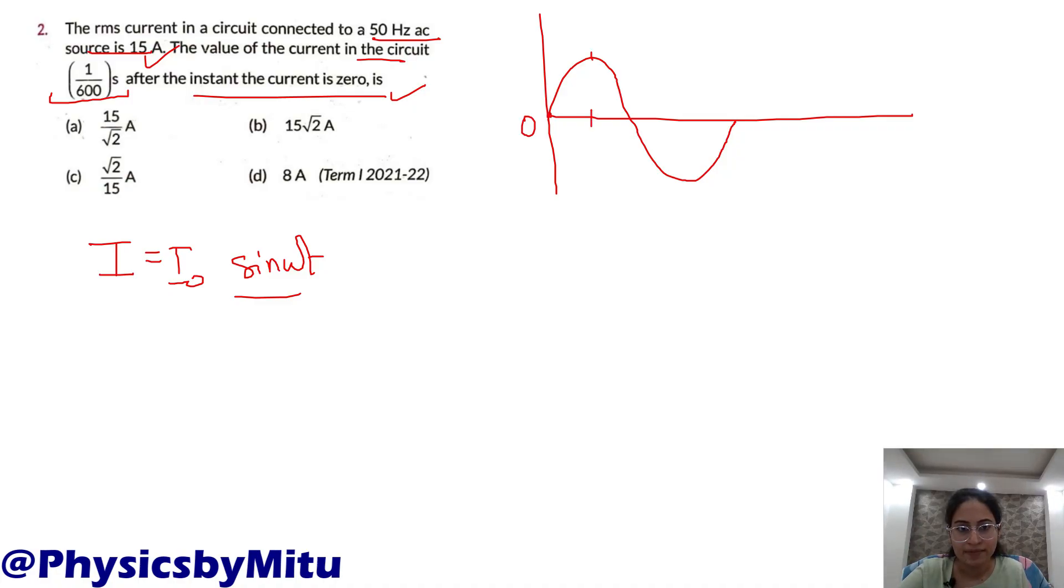This is t/4, this is t/2, and this is time period t. This is current. This is graphical representation of the alternating current. We have to find the current in the circuit 1/600 seconds after the instant the current is zero.